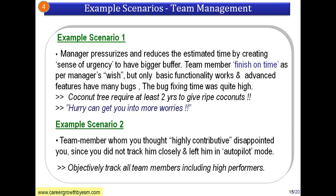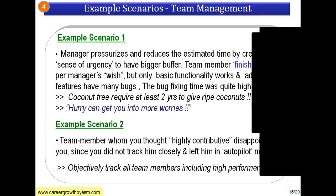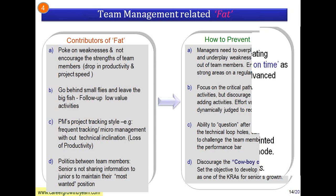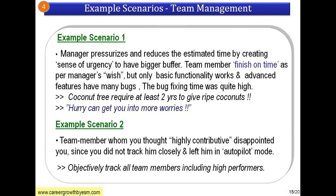It is like planting a coconut tree — it definitely takes two to two-and-a-half years to get coconuts. If you plant the tree and demand coconuts after one year, it simply cannot give them. You have to wait a certain amount of time. You can't hurry up certain things. Hurry will spoil the curry, and hurry can get you into more worries. Don't hurry things that cannot be hurried.